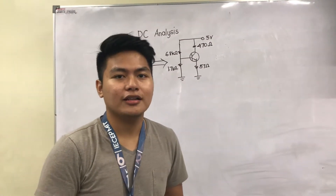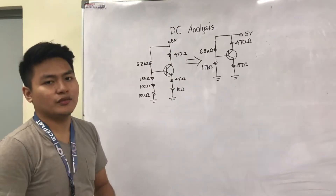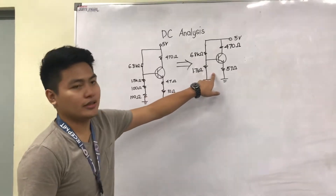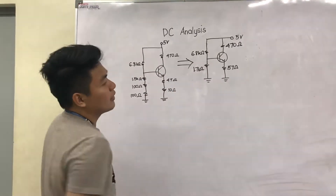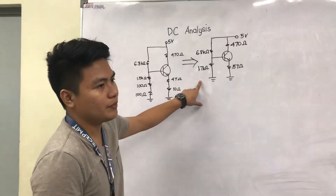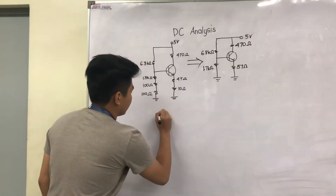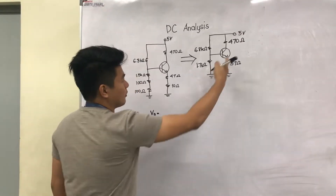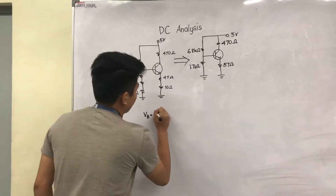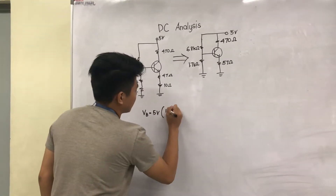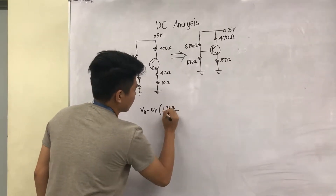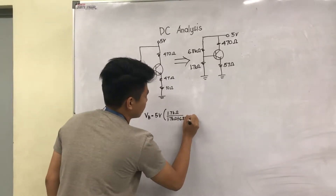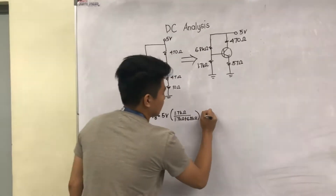Hi, I'm Rainiel. Now, let's proceed to the DC analysis of the circuit shown. We all know that this circuit can be simplified. By calculating the VB using approximate analysis, VB is equal to, using the voltage divider principle, 5 volts times 1.7 kilohms over 1.7 kilohms plus 6.8 kilohms. And the answer to this is 1 volt.